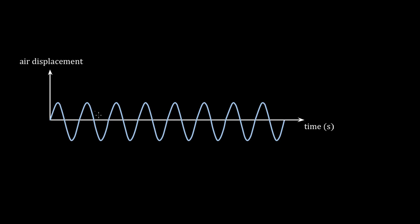This graph gives you the displacement of the air molecules for any time at a particular location. So say you had some speaker playing a nice, simple harmonic tone — that's 440 hertz, which is an A note, used a lot when tuning instruments. The speaker sends sound out, and at a particular point in space — say three meters to the right — the air gets displaced back and forth a minuscule amount. If we graphed that displacement as a function of time, we'd get this graph, personalized for that point in space.